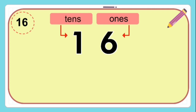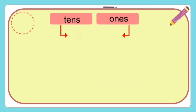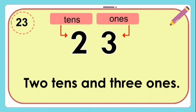Six is in the ones place. 16 is equal to one ten and six ones. Two is in the tens place and three is in the ones place. 23 is equal to two tens and three ones.